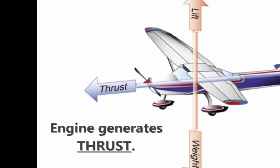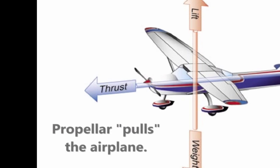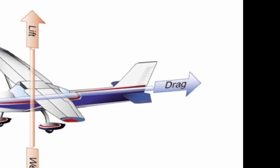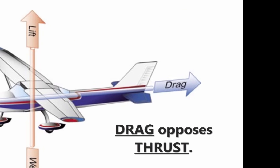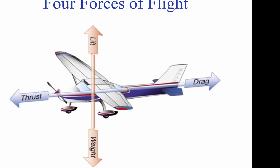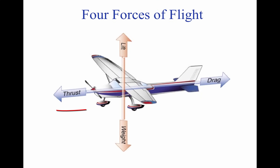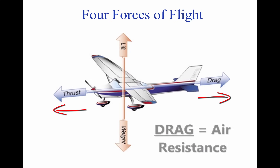Thrust is generated by the engine and the propeller, which pull the plane forward through the air. Drag is the next force and acts opposite the aircraft. While thrust pulls the plane forward, drag slows the plane down and is caused by air hitting the body of the airplane.